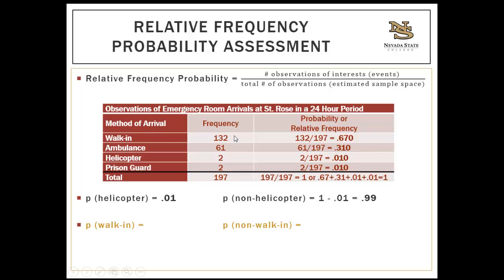Here's an example using a relative frequency distribution table — which you've constructed before. In a 24-hour period, 132 patients were walk-ins at St. Rose, 61 arrived in an ambulance, 2 arrived in a helicopter, and 2 were brought in by a prison guard, totaling 197 patients. The relative frequency (probability) for each: 132 divided by 197 equals 0.670 for walk-ins, and so on. Notice that all the probabilities sum to 1, because every method of arrival is included.